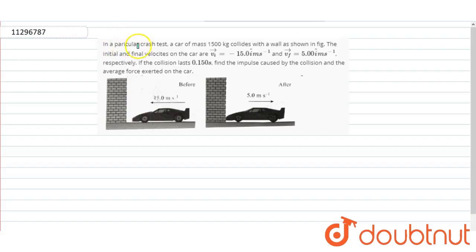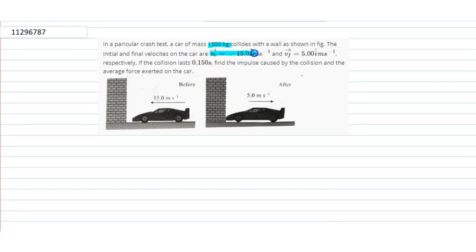We have a problem. In a particular crash test, a car of mass 1500 kg collides with a wall as shown in figure. The initial and final velocity of the car are given, which are v initial is minus 15 i cap meter per second and v final is 5 i cap meter per second respectively. If the collision lasts 0.15 seconds, find the impulse caused by the collision and the average force exerted on the car.